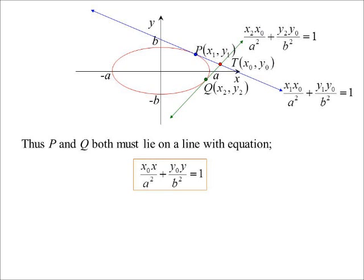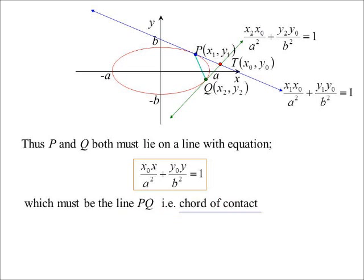x₀x/a² + y₀y/b² = 1. Because we showed that x₀x₁/a² + y₀y₁/b² = 1, so x₁, y₁ satisfies this equation. Similarly, x₂, y₂ also satisfies it. That is the equation of a straight line — a constant times x plus a constant times y equals some number. It must be PQ because both P and Q satisfy that equation. Notice that, just like the tangent, it has the same form as the ellipse itself. The difference is x₀, y₀ is not on the ellipse — it's the external point — so we're talking about the chord PQ, not a tangent.